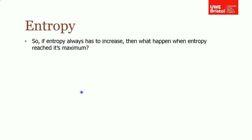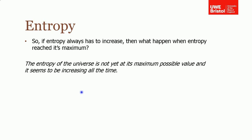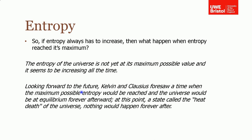If entropy always has to increase, what happens when it reaches its maximum? This was actually foreseen by Kelvin and Clausius — they foresaw a time when the maximum possible entropy would be reached and the universe would be in equilibrium. After that point, which they termed the heat death of the universe, nothing would ever happen, because there would be no delta T, entropy can't increase anymore, and it has to increase or stay the same. And on that bombshell, that concludes this lecture on the second law of thermodynamics.